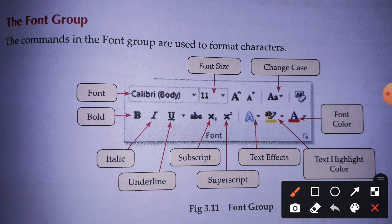As you can see on the screen, this is the Font group. It contains many tools related to font. First is Font Size — you can increase or decrease your font size according to your needs. Next is Font — this is the style or pattern of your characters. Click the Font dropdown to see a list of available fonts and select any font you like. Remember, you must select your text before applying any font or font size.